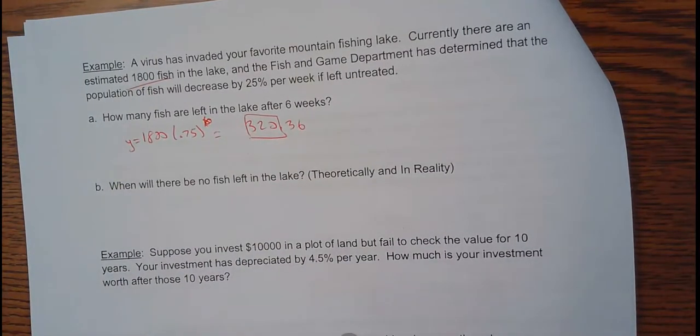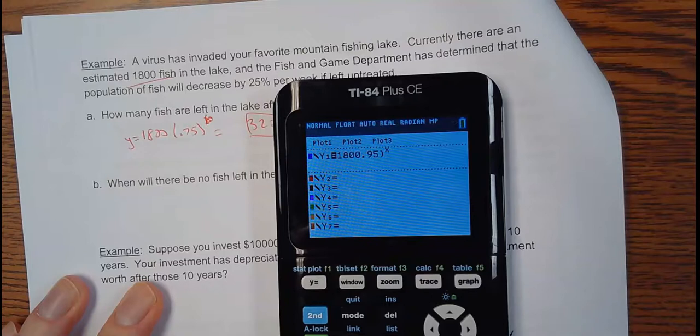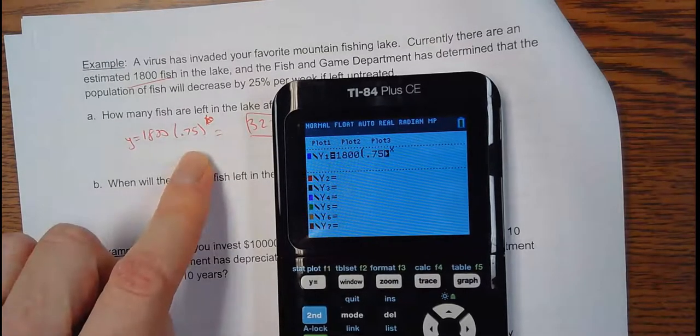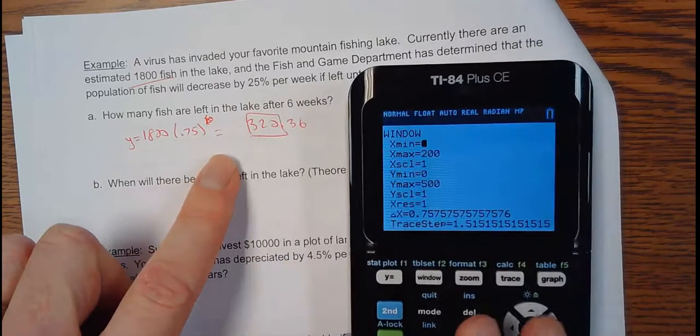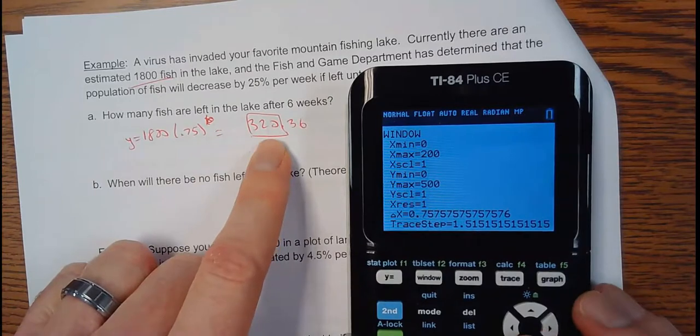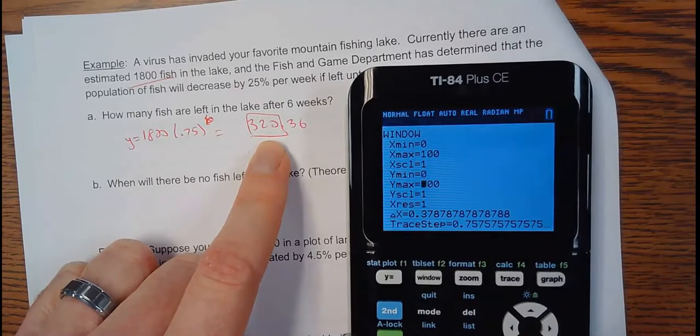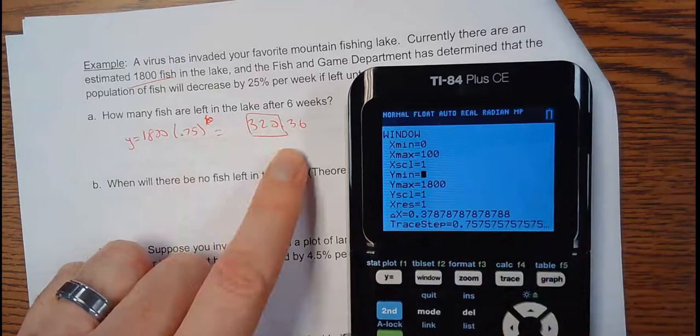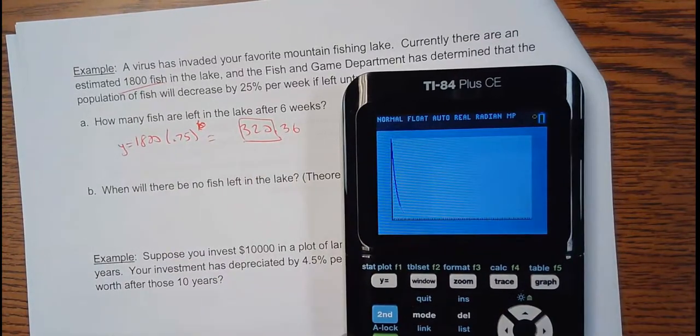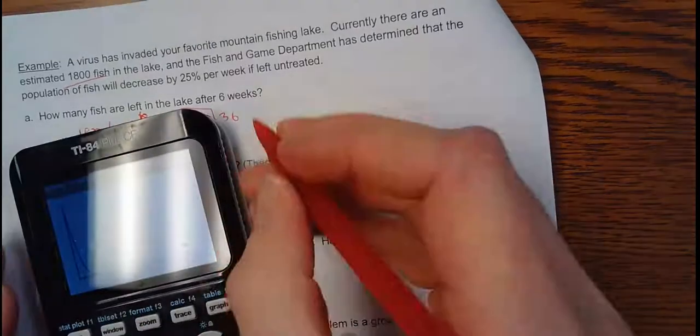When will there be no fish? Let's graph that guy and take a look at it. I'm going to change this to 1,800 times parentheses 0.75 to the x. My x min, I imagine, if after six weeks were this low, we'd probably make us try 100. I'm thinking 100 is probably the most number of weeks. And then my y max, my y min. 1,800 is my starting value. So, I made that the highest my y goes. I want to find out, theoretically, when are there no more fish? Well, theoretically, will I ever hit zero? And this one's never theoretically. Because there's an asymptote. Theoretically, by the equation, there's going to be at least one fish always. And then a half a fish and a fourth of a fish. So, that doesn't really make sense.